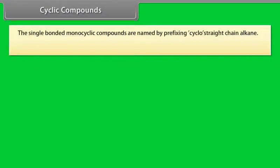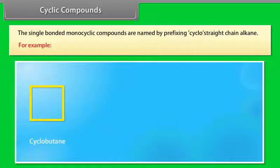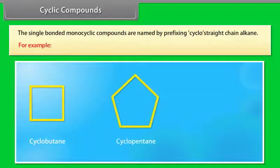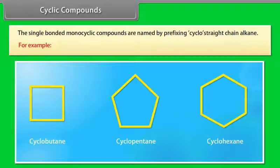Cyclic compounds. Single-bonded monocyclic compounds are named by prefixing 'cyclo' to the straight-chain alkane name. For example: cyclobutane, cyclopentane, cyclohexane.